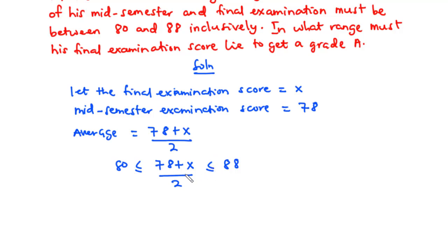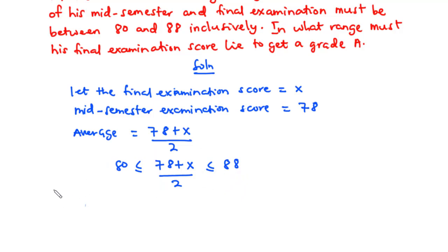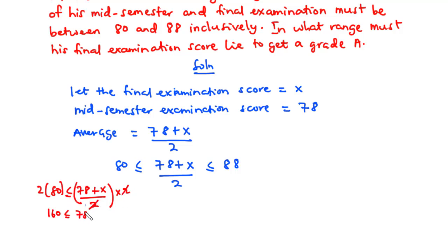Because we have two inequality signs, we solve each part simultaneously. For the first part: 80 ≤ (78 + x) / 2. Multiplying each term by 2 gives 160 ≤ 78 + x. Transposing 78 to the left-hand side: 160 minus 78 is less than or equal to x, giving x is greater than or equal to 82.